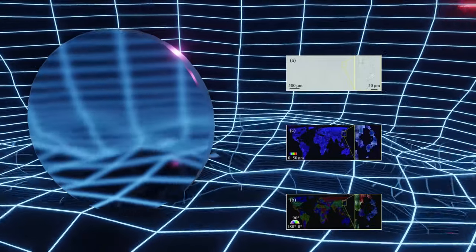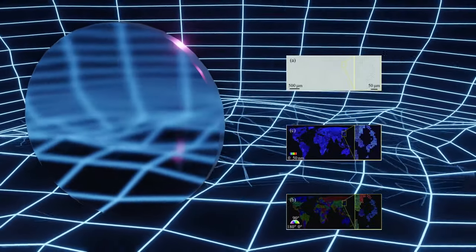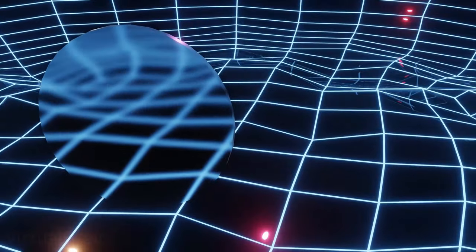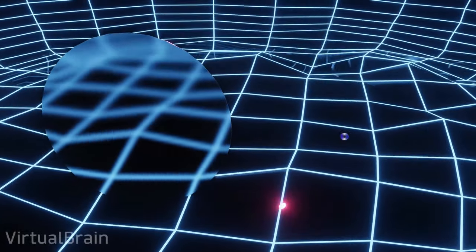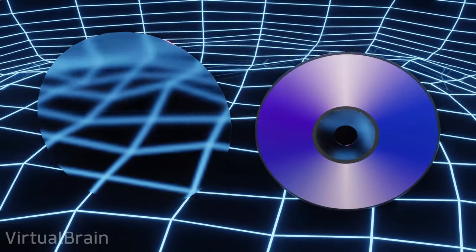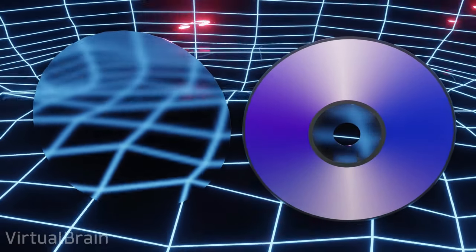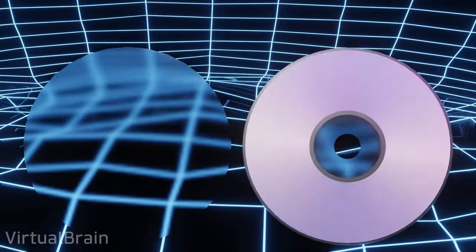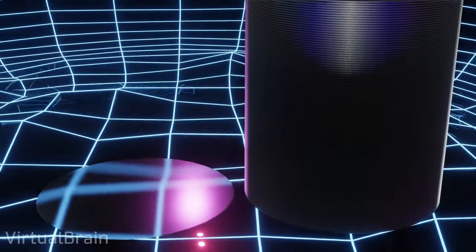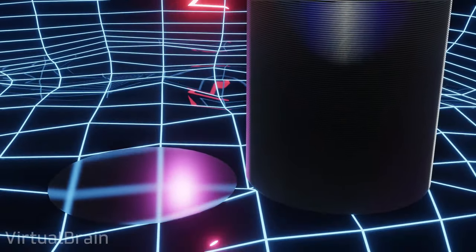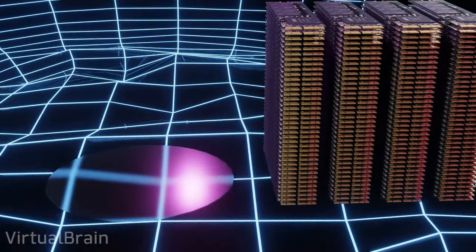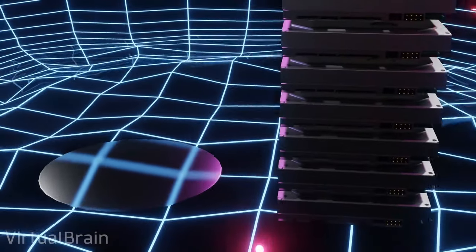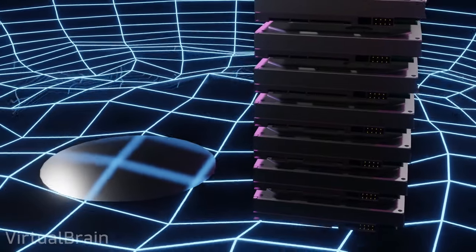If we consider all the characteristics we have talked about so far, a disc of 120 millimeters in diameter and 1.2 millimeters thick, which is the same shape of CD, DVD, and Blu-ray, would theoretically be able to store up to 360 terabytes of information, which would be equivalent to about 7200 Blu-ray discs of 50 gigabytes, 360 solid state drives of 1 terabyte, or 23 hard drives of 16 terabytes. Whichever comparison you prefer, it's still quite a lot.